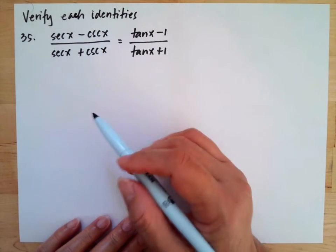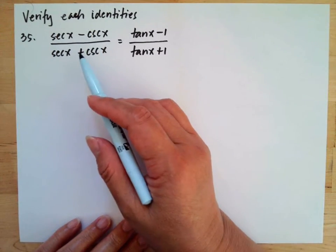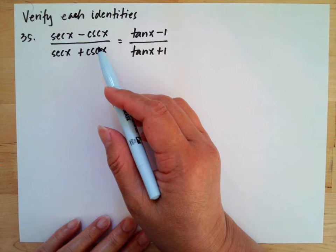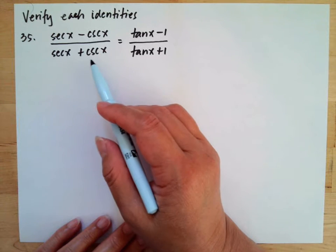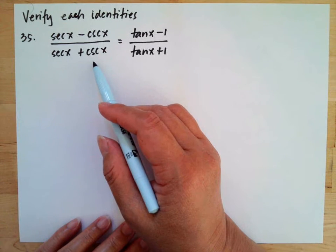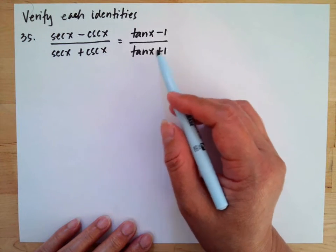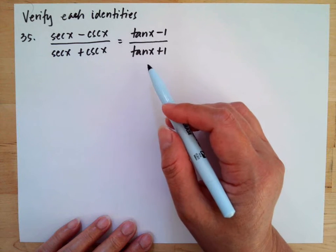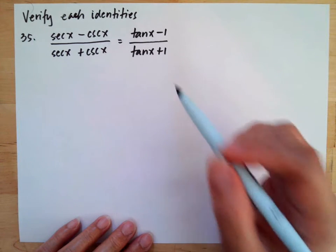We need to verify the identity: (sec x minus csc x) over (sec x plus csc x) is equal to (tan x minus 1) over (tan x plus 1).